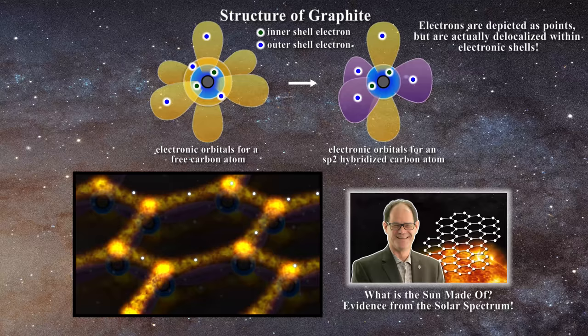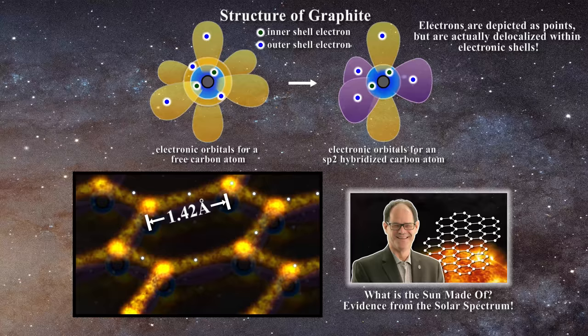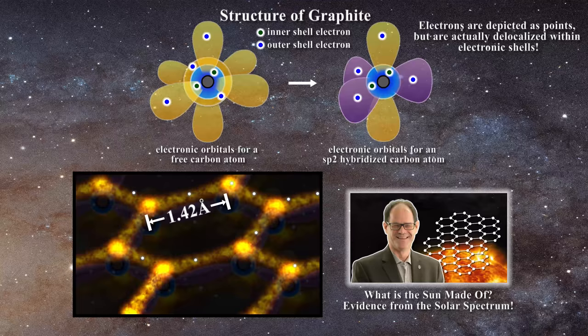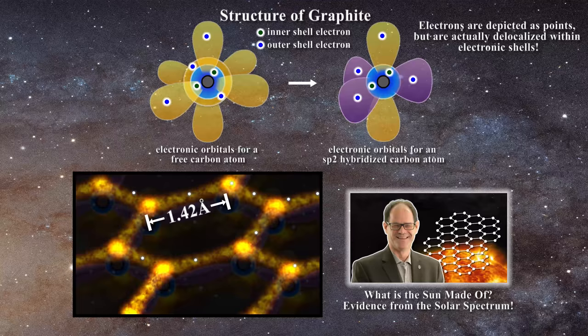That electron is able to become delocalized and can be used to make pi bonds within the lattice. The carbon-carbon bond length in graphite is about 1.42 angstroms, which is only slightly larger than that of a normal carbon-carbon double bond. It is the presence of these pi bonding electrons which enables graphite to strongly absorb in the optical. The sigma bonds are not able to absorb in that region of the electromagnetic spectrum.